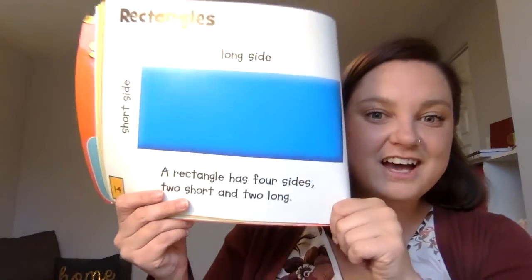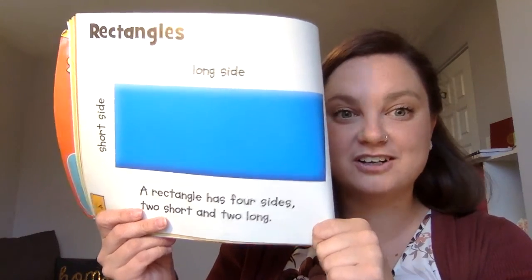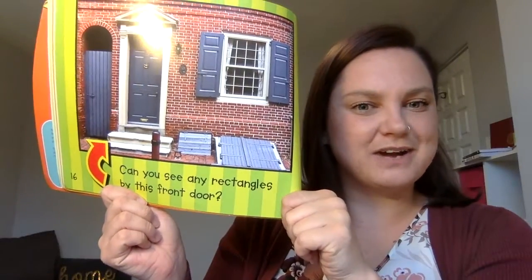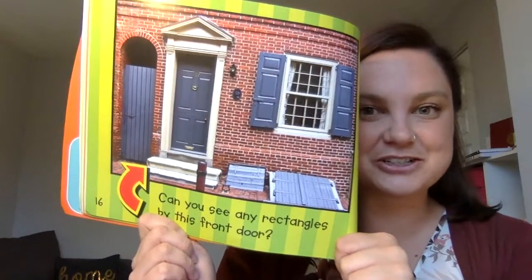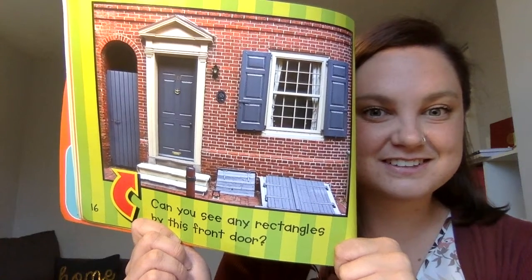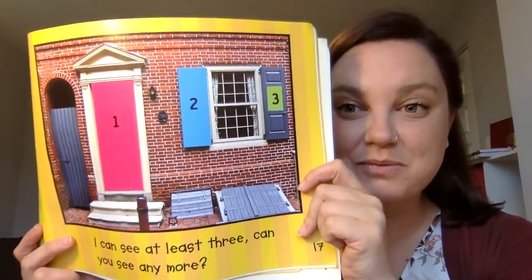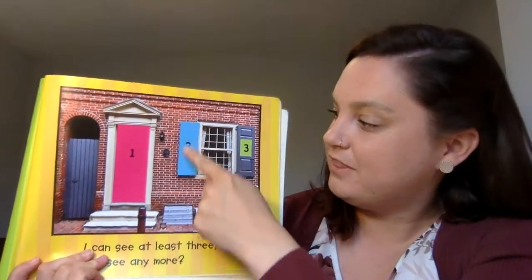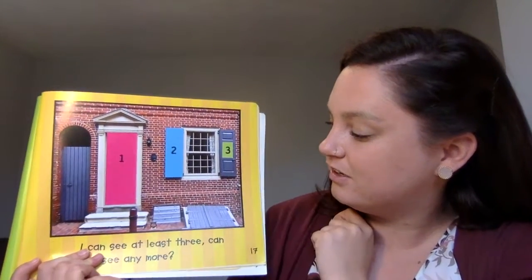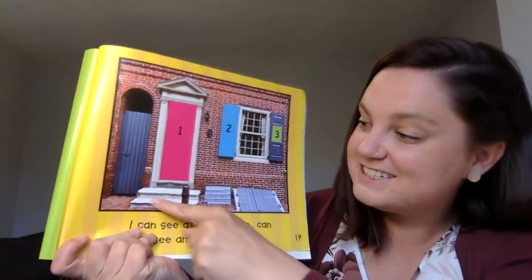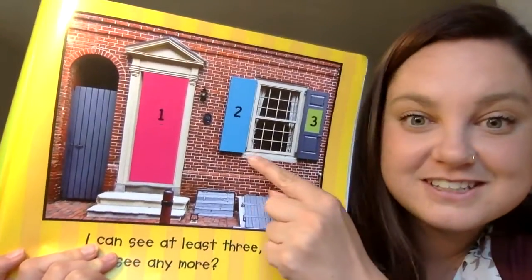Rectangles. A rectangle has four sides — two short and two long. If you think it's got six sides, well, I'm afraid you're wrong. That is a hexagon with six sides. Can you see any rectangles by this front door? I'll give you a moment to look. I can see at least three — the door, the shutters, and the rectangle inside the shutter. I noticed another rectangle over here made up of lots of little rectangles. The steps and bricks could also be rectangles.